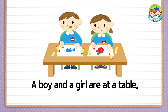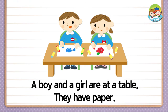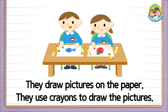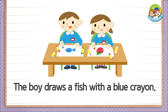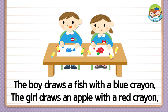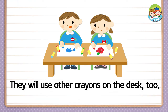A boy and a girl are at a table. They have paper. They draw pictures on the paper. They use crayons to draw the pictures. The boy draws a fish with a blue crayon. The girl draws an apple with a red crayon. They will use other crayons on the desk, too.